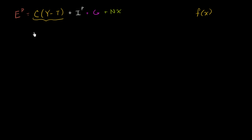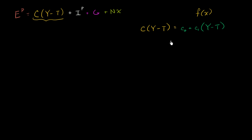Let's say that our consumption function — aggregate consumption as a function of disposable income, as a function of income minus taxes — is going to be equal to some autonomous expenditure plus the marginal propensity to consume times disposable income. So now you see that aggregate consumption is being defined as a function of disposable income. That's what that notation right over there means.